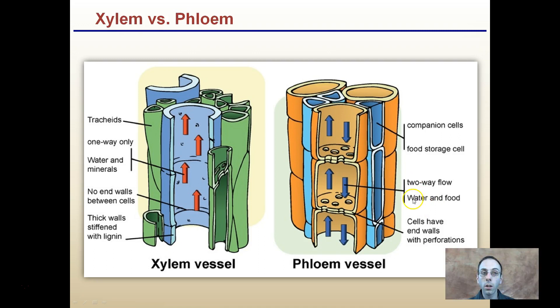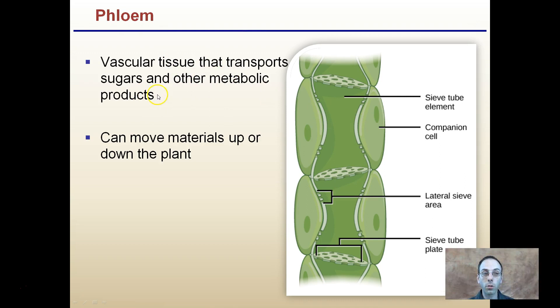Remember our xylem and phloem — our vascular connections. Xylem is moving water from the roots to the shoots, and phloem is moving mainly carbohydrates up and down in close proximity to companion cells. The phloem, as vascular tissue, transports sugars and other metabolic products and can move materials up and down the plant. Our sieve tube elements and companion cells are all involved in the phloem and the movement of carbohydrates and other metabolic products.